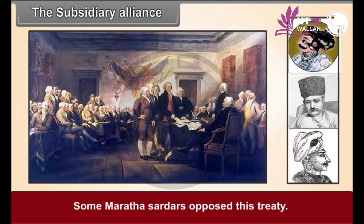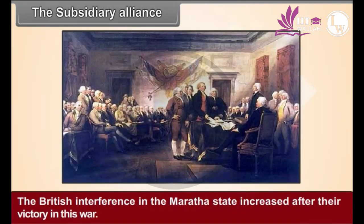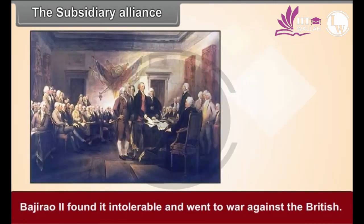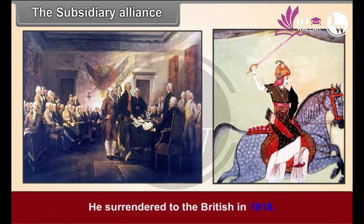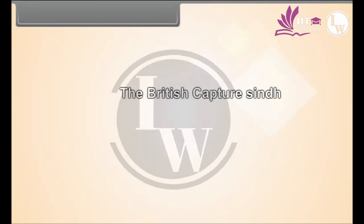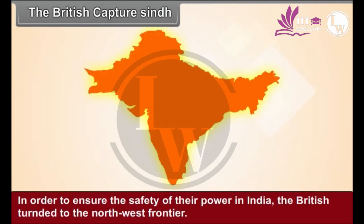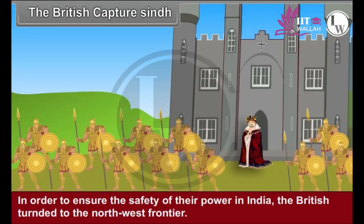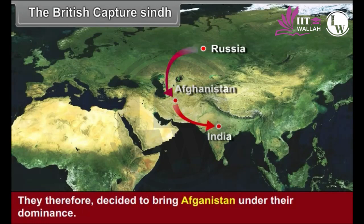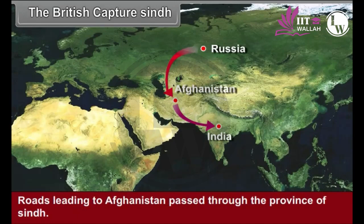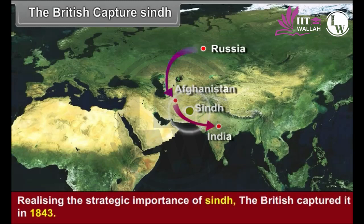Some Maratha Sardars opposed the Treaty of Bassein, leading to the Second Anglo-Maratha War. British interference in the Maratha state increased after their victory. Bajirao II found it intolerable and went to war against the British, but was defeated and surrendered in 1818. In order to ensure the safety of their power in India, the British turned to the northwest frontier. They were afraid of Russian aggression on India via Afghanistan and decided to bring Afghanistan under their dominance. As roads to Afghanistan passed through Sindh, the British captured Sindh in 1843, realizing its strategic importance.